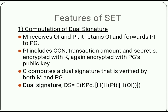The merchant retains the OI and forwards the PI to the payment gateway (PG). The PI includes a credit card number (CCN), transaction amount, and a secret S — all encrypted with a key K and again encrypted with PG's public key. The customer computes the digital signature and forwards it to M and PG, where both verify it. The dual signature equals: PI is hashed and OI is hashed, both are concatenated, hashed again, and encrypted with a key.